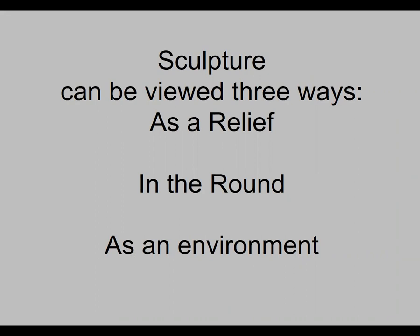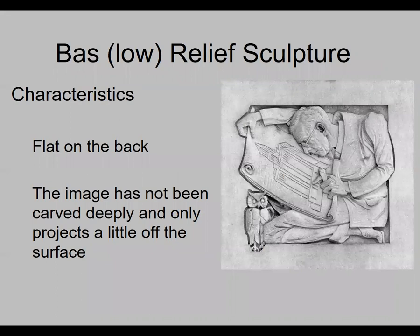We can view sculptures in three ways: as a relief, in the round, or as part of an environment or installation. We're going to talk about relief sculpture first. There are two different kinds of relief sculpture: bas relief and high relief, and we're going to talk about bas relief first.